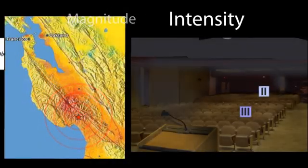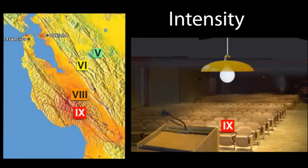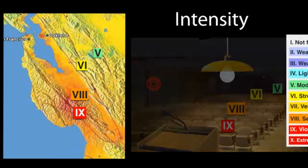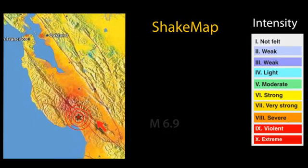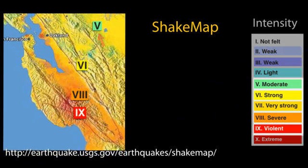The intensity, or shaking level, is like the amount of light from a lightbulb received at any spot in a room. A small lightbulb in one area of a room will make that area bright with high intensity light, but it will leave distant areas dim with low intensity light. So a given earthquake has only one magnitude but will produce different intensities of ground shaking at different locations, as shown on a shake map.